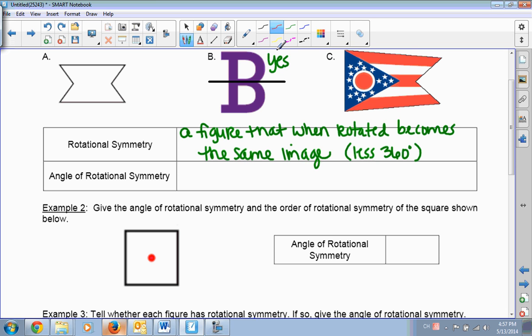Okay, the angle of rotational symmetry is the smallest angle a figure can be rotated to coincide with itself, to become itself again.